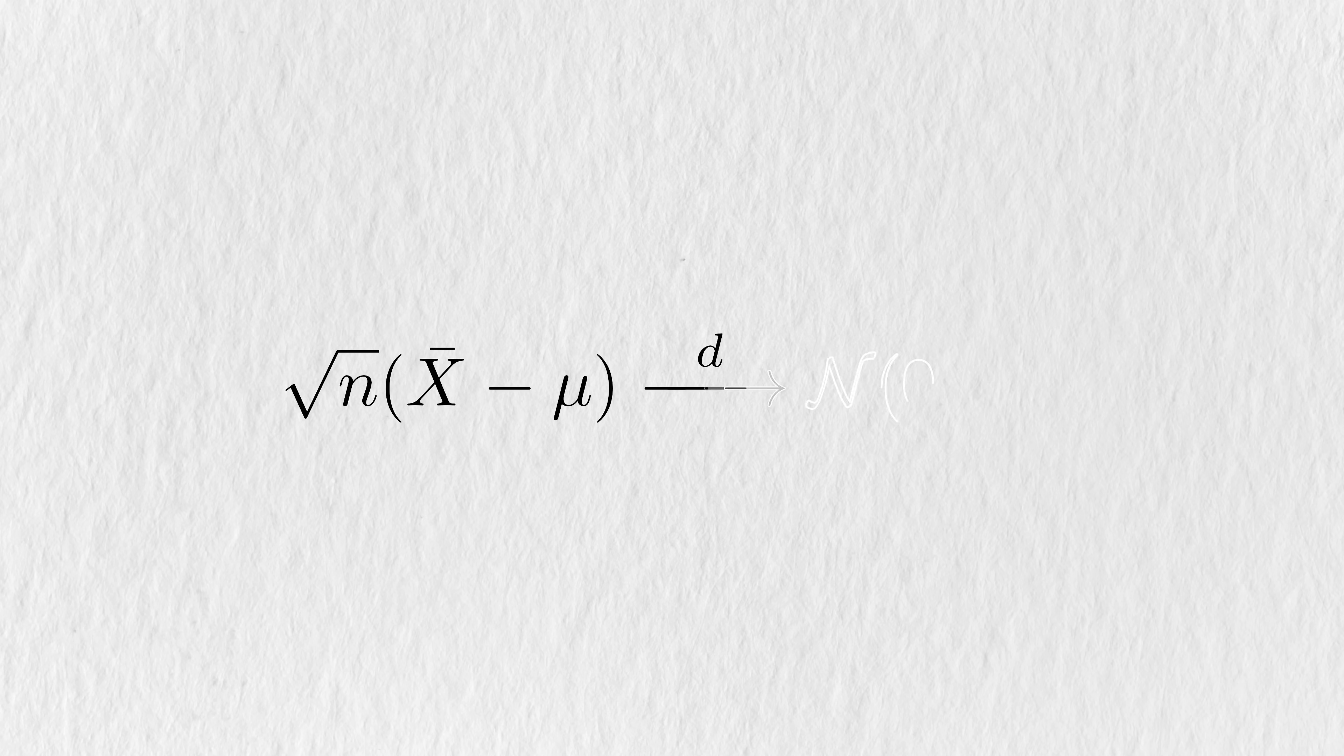Next up is the central limit theorem. Similar to the law of large numbers, I'll opt to walk through a visual description instead of a rigorous mathematical one. But before that, we need to talk about this new character here. This value, sigma squared, represents the true variance of the data we're collecting. How spread out the values can be, and how far they can get from the true mean mu.